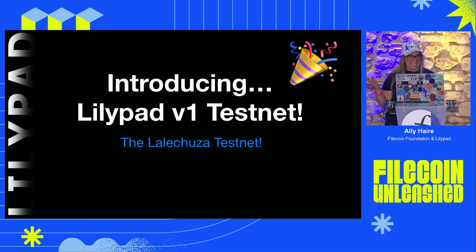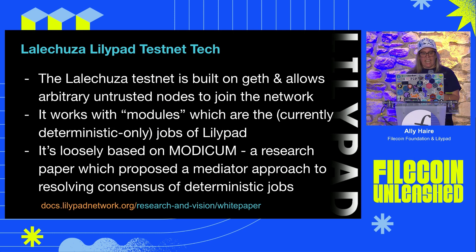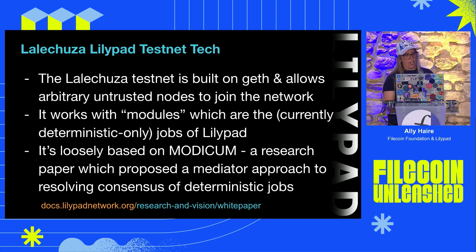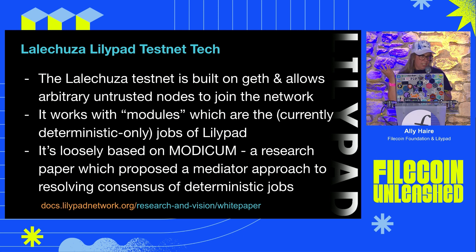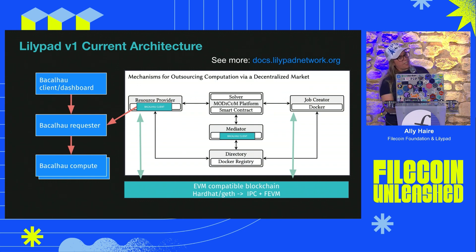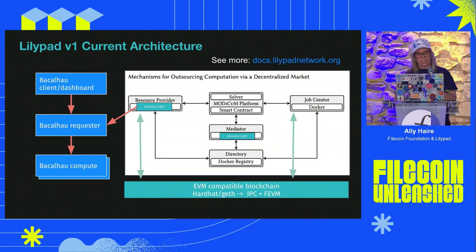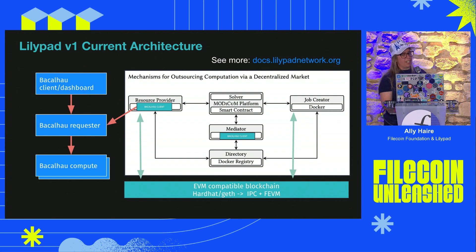With Lilypad v1, we're aiming bigger — building a trustless distributed compute network that enables internet-scale data processing with AI, ML, and other arbitrary compute. This is especially interesting given the storage and large data sets we already have on Filecoin. The team has released the Lilypad testnet. It's a Solidity implementation for arbitrary untrusted nodes to join networks and for users to run compute jobs via Lilypad modules, loosely based on the Modicum research paper, and designed to work with IPFS and Filecoin.